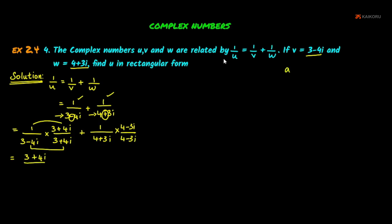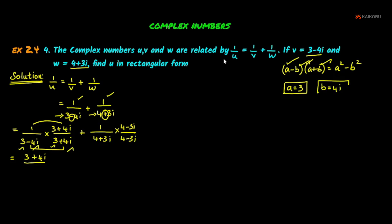Using the formula (A minus B)(A plus B) = A squared minus B squared: here A is 3 and B is 4i. So the denominator becomes 3 squared minus (4i) squared, which is 9 minus 16i squared. Since i squared equals minus 1, this gives 9 plus 16 = 25.